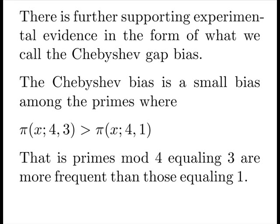There is further supporting experimental evidence in the form of what we call the Shevichev Gap Bias. Not to be confused with the Shevichev Bias. The Shevichev Bias is a small bias among the primes, where primes modulo 4 equaling 3 are slightly more frequent than those equaling 1.